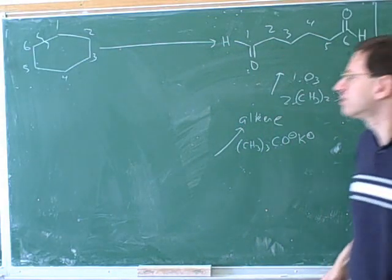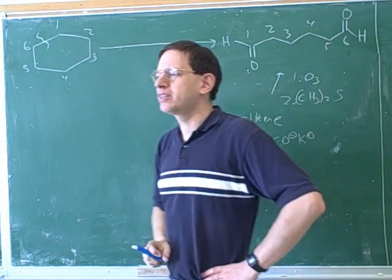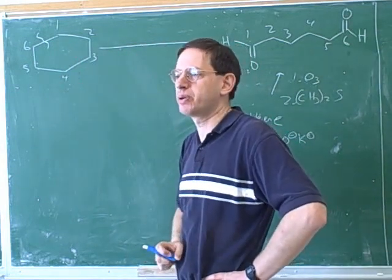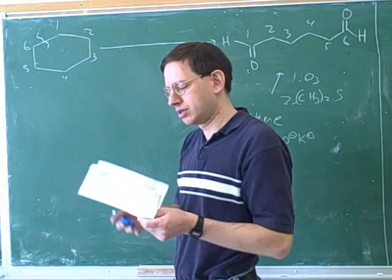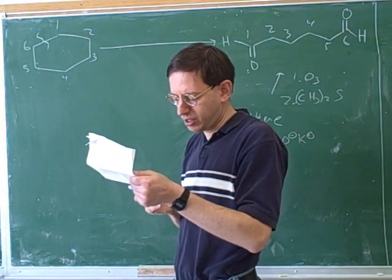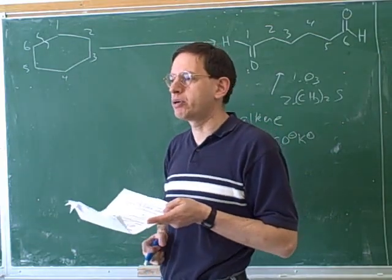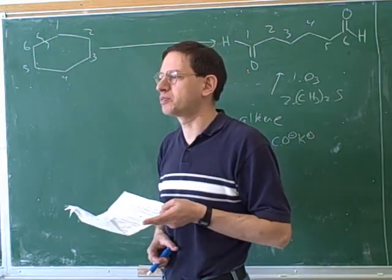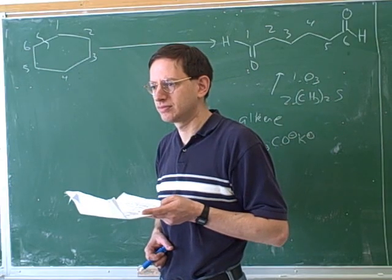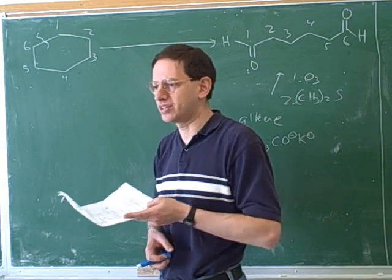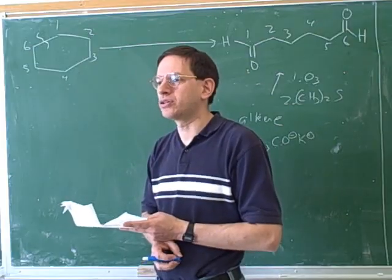Can we add water to it? The problem is, since there's no functional groups, water won't react with this. So you have to first put in a functional group. And you really only learned one way to put in a functional group to a molecule with no functional groups. HBr? That would react on an alkene, but it won't react if there's no functional groups at all. There's only one way to make it — halogenation. What we need here is the radical halogenation.